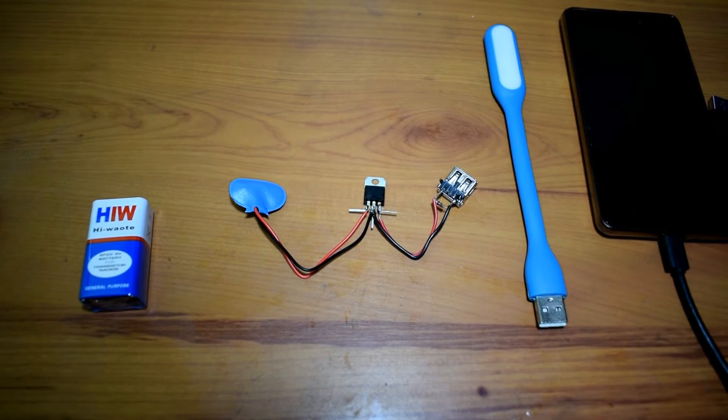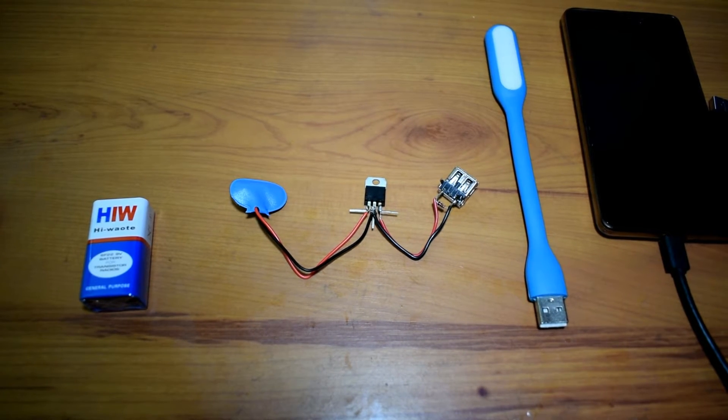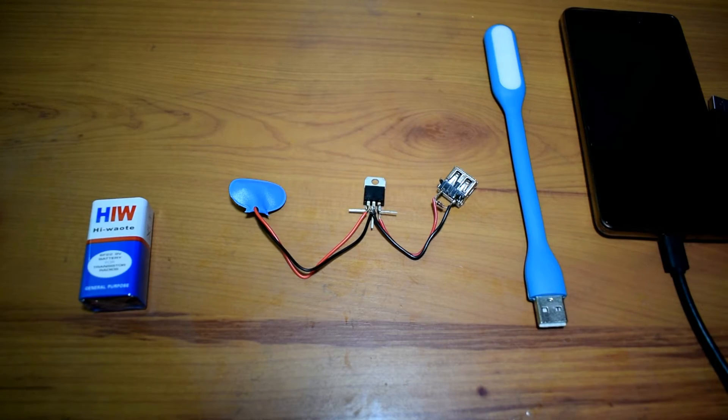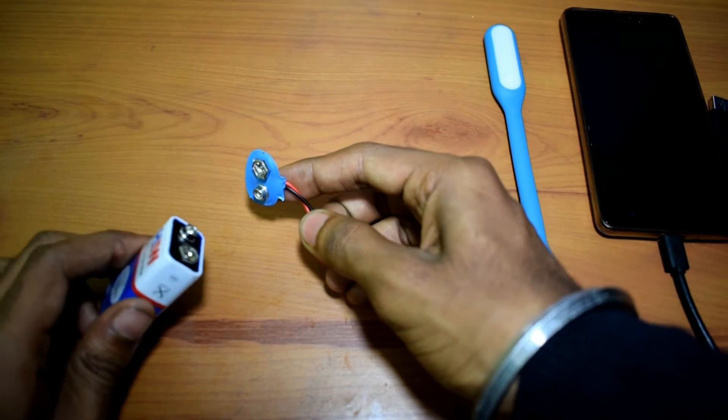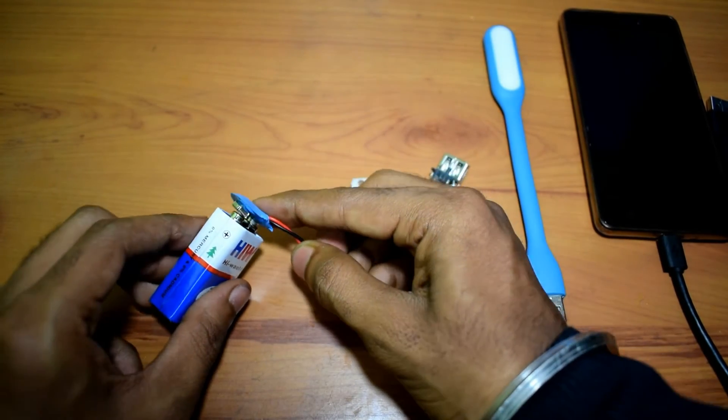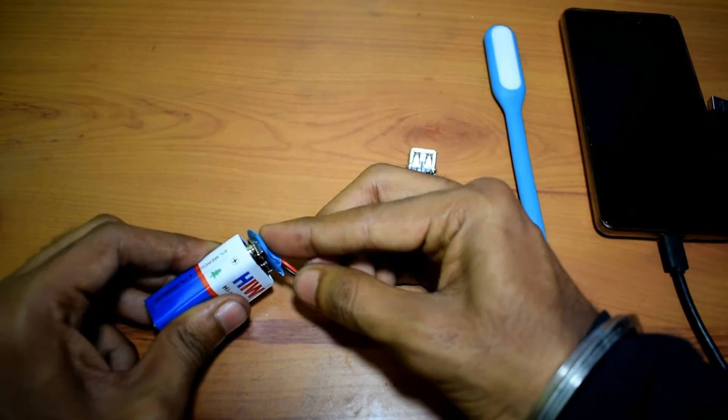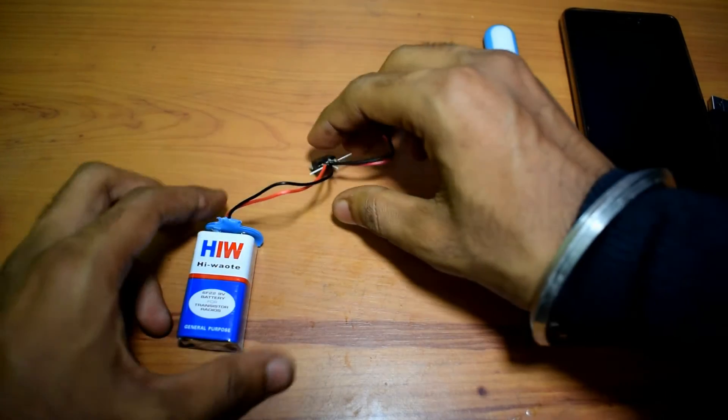As you can see, we have successfully soldered all the items and it looks like this. Let us connect the battery to the adapter and test it with the USB light.